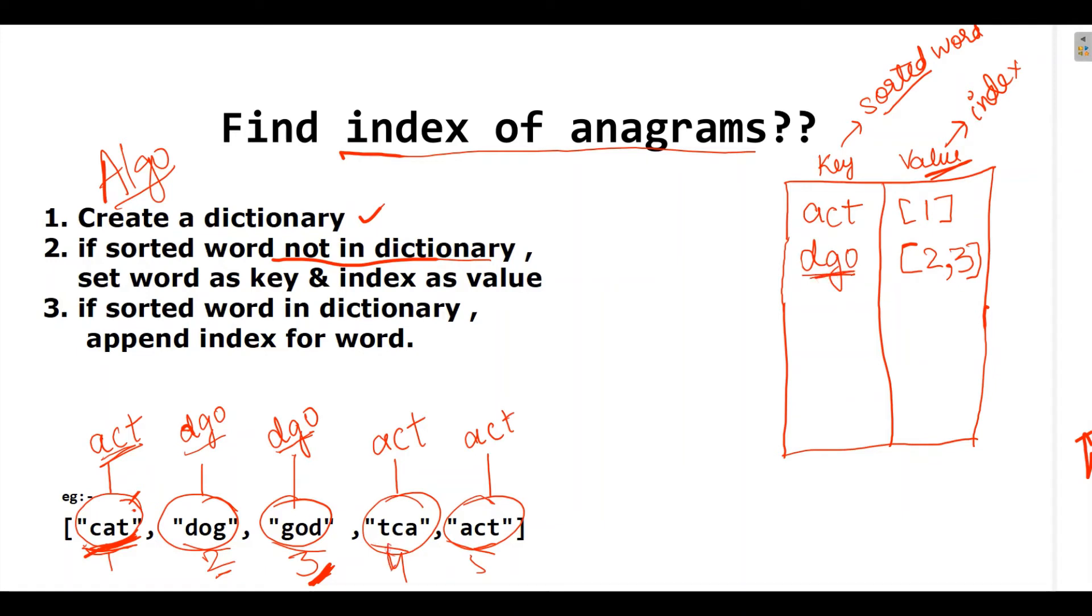Now, similarly at fourth index, we have act again. We need to call act and we will append 4 and for fifth index 5 again. So, this is our question. Now, let us solve this with the help of python program.